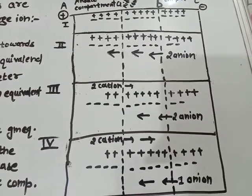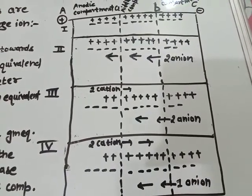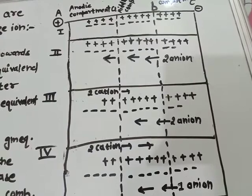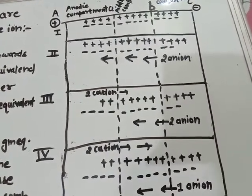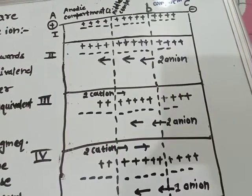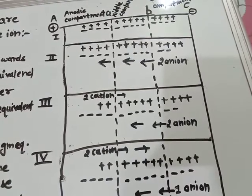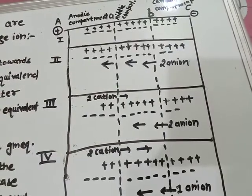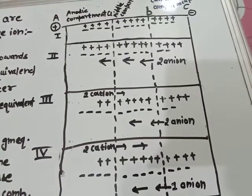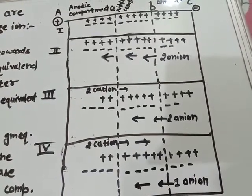What was Hittorf's rule? Hittorf's rule states that the speed of the ions away from an electrode are directly proportional to the fall in concentration around that electrode. We illustrated the ratio of the fall in concentration around the anode to the fall in concentration around the cathode, which was equal to the ratio of speed of the anion to the speed of the cation.